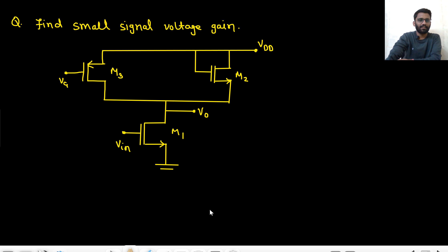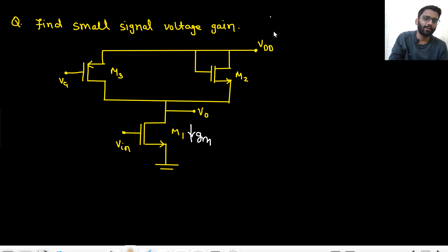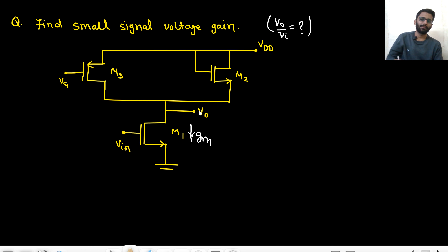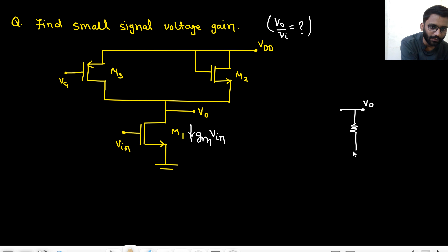This is considered a tough problem in GATE. You need the small signal voltage gain, i.e., VNode/VIN. From VNode, I can see gm·VIN current and R01. From VNode to ground, I see R01 resistance (this is M1). VDD will be shorted, and VG will also be shorted — both are DC biases.